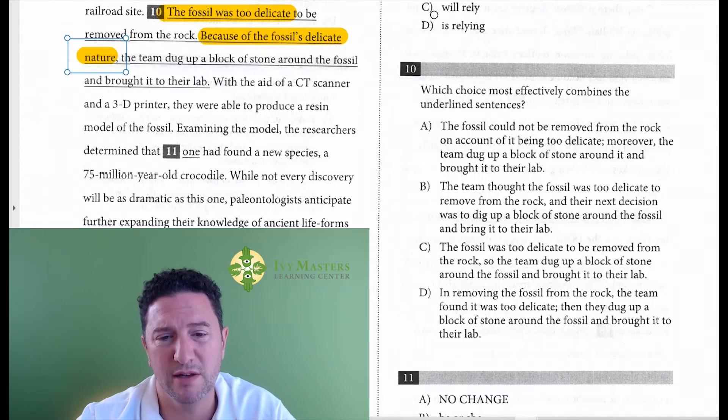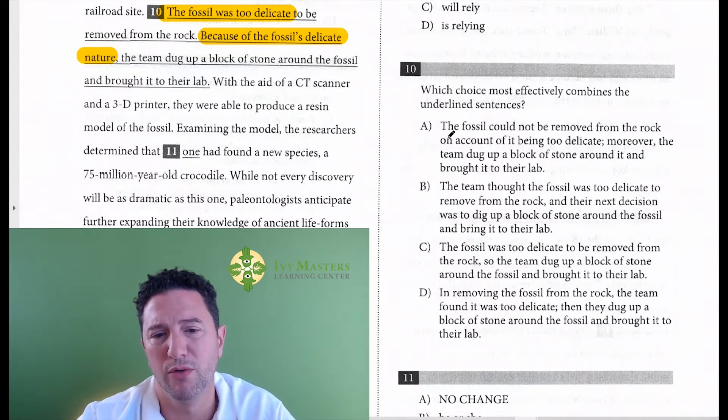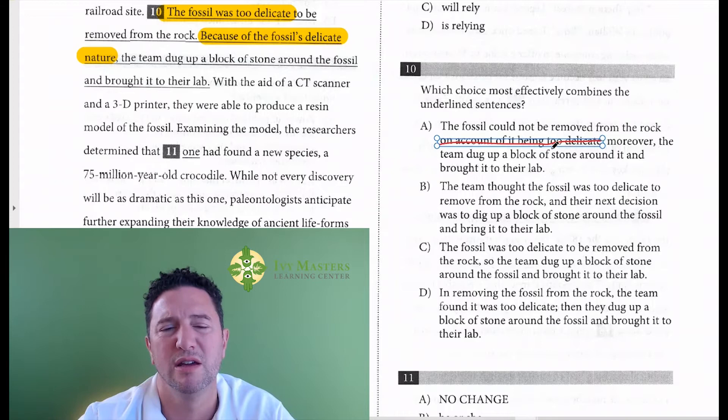When I go to my answer choices, the fossil could not be removed from the rock on account of its being too delicate. Moreover, the team dug up a block of stone around it and brought it to their lab. On account of its being too delicate, it sounds like it's too wordy. If you see one answer choice that's too wordy, just pick the shortest one.